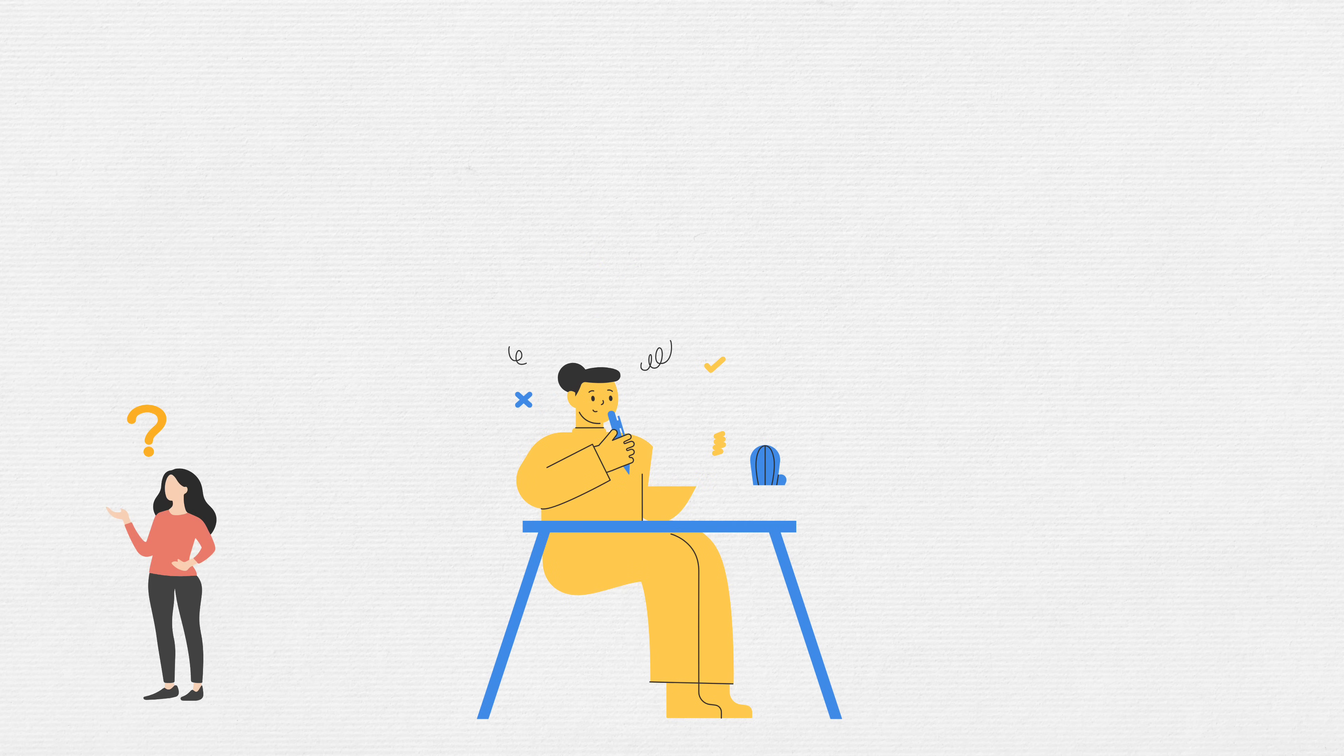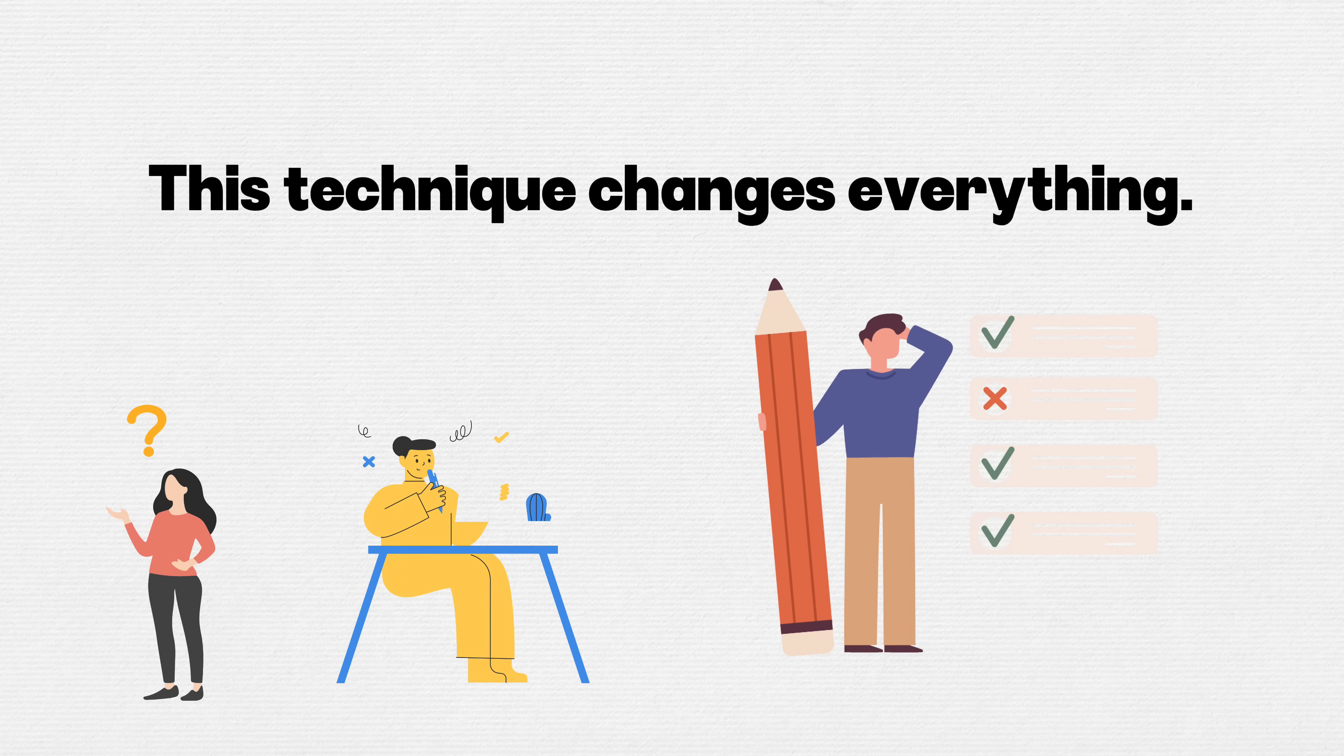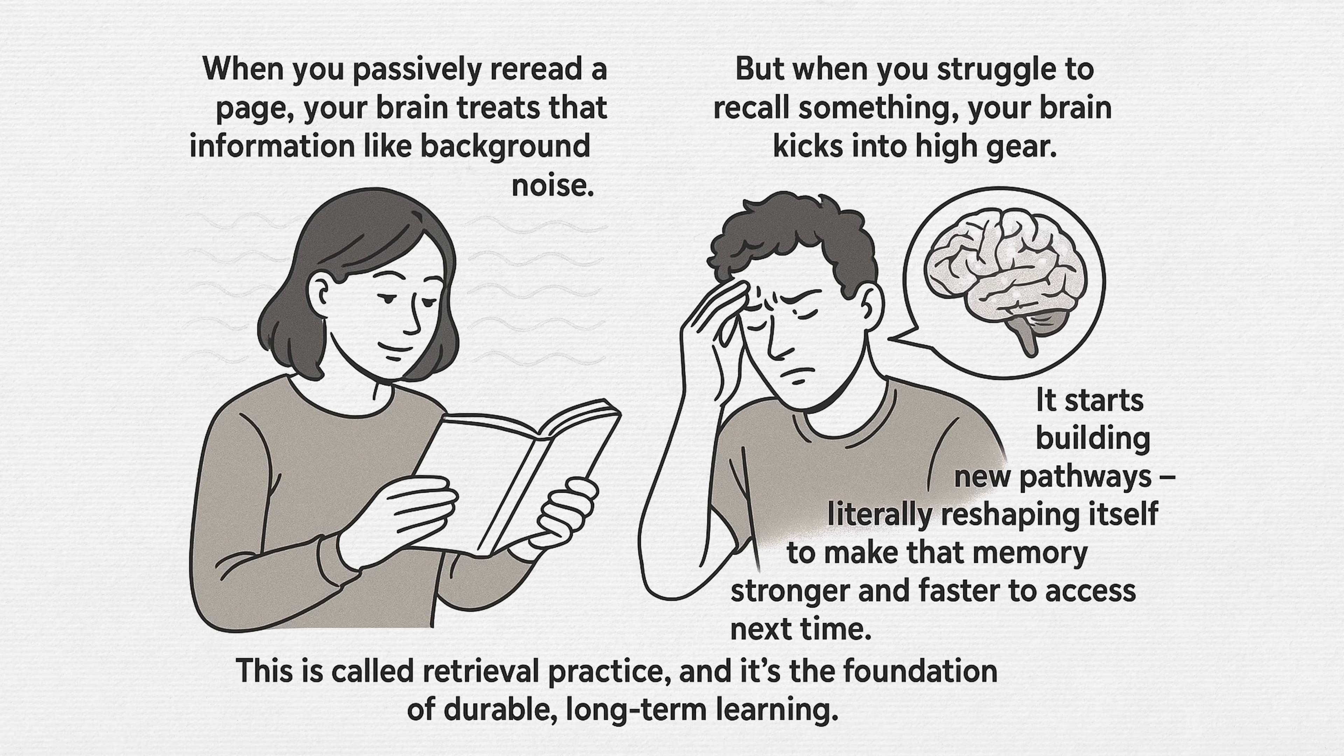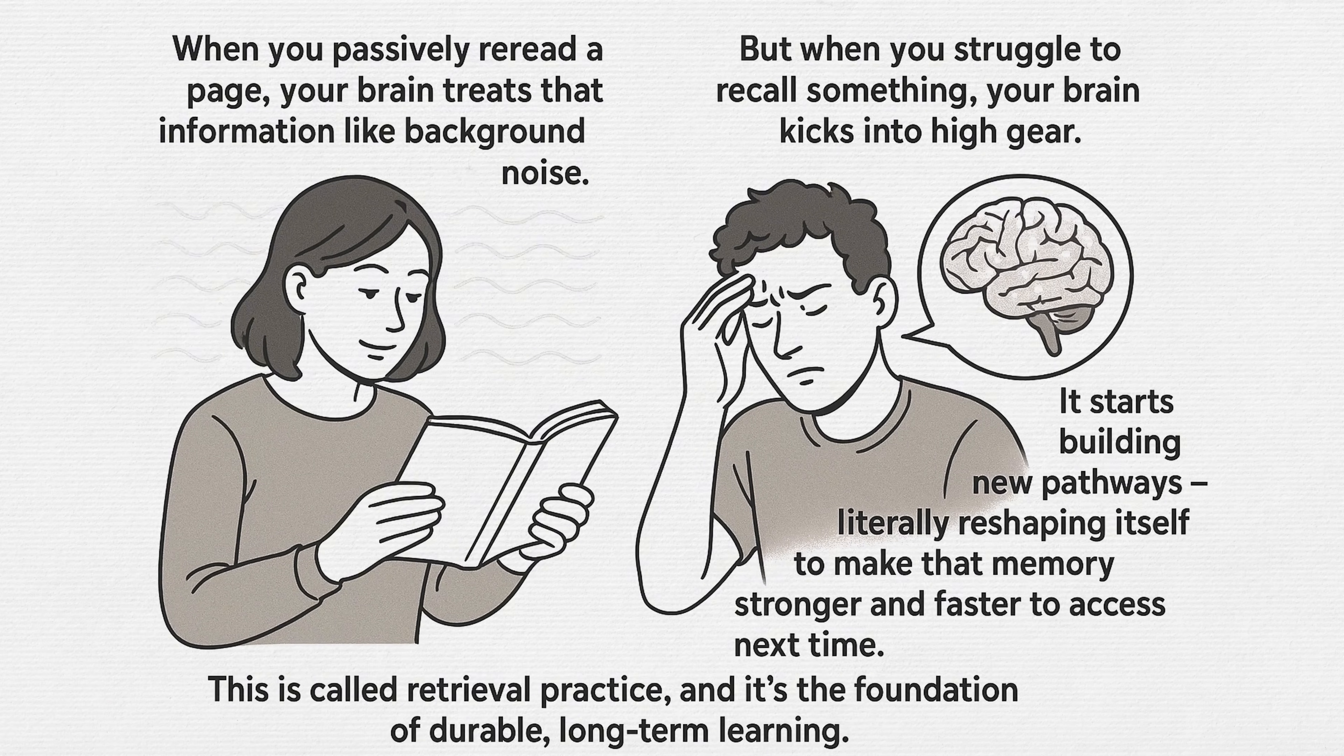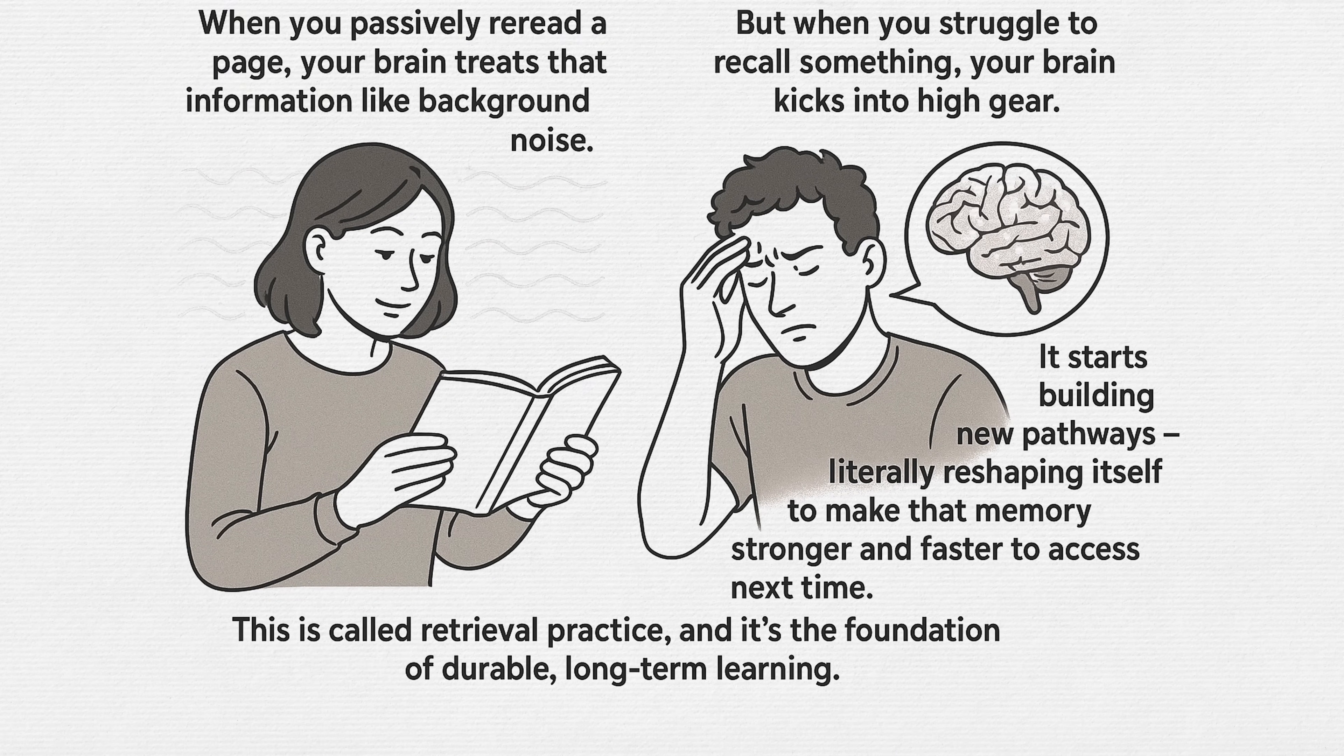Then, and only then, do you check the correct answer. It sounds simple. But this technique changes everything. When you passively reread a page, your brain treats that information like background noise. But when you struggle to recall something, your brain kicks into high gear. It starts building new pathways, literally reshaping itself to make that memory stronger and faster to access next time. This is called retrieval practice, and it's the foundation of durable, long-term learning.